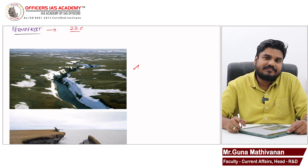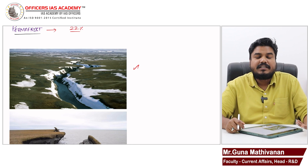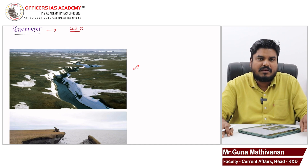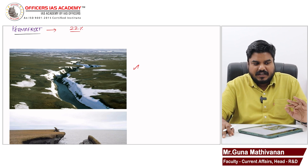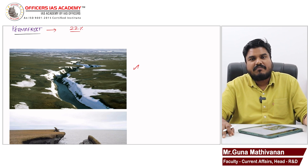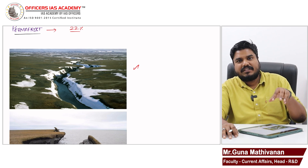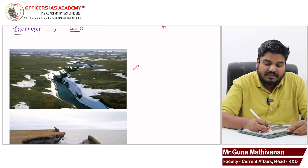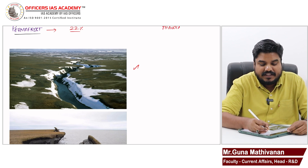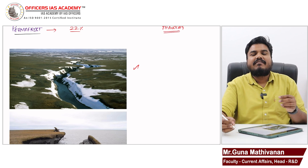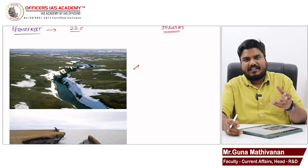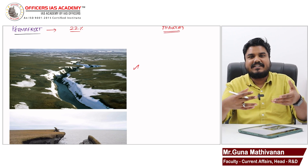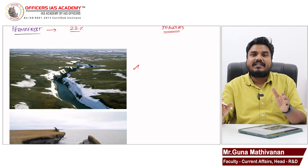Now, what is the problem? The problem is global warming. Because of climate change and global warming, these permanently frozen regions are getting melted. That is called permafrost thawing. When I say thawing, that means softening — the hard ice is getting softened, it is getting melted, it becomes water.